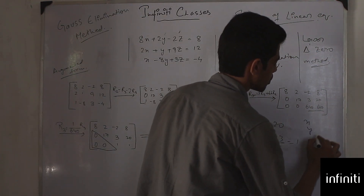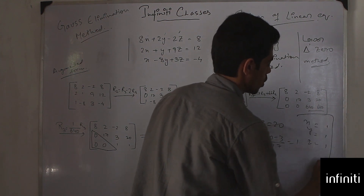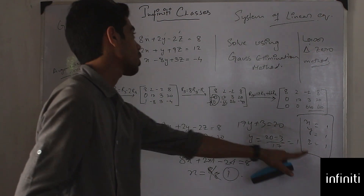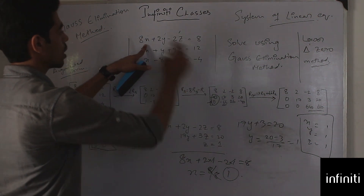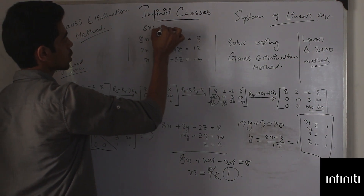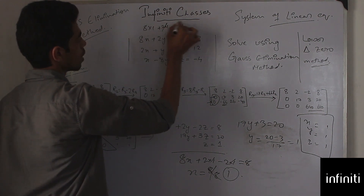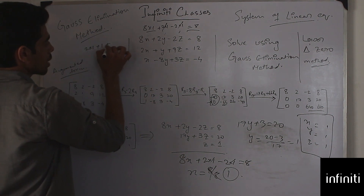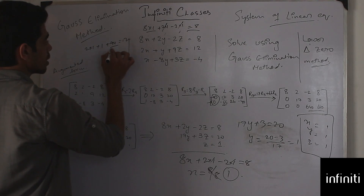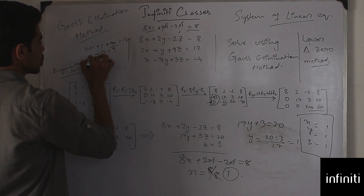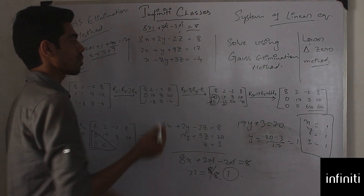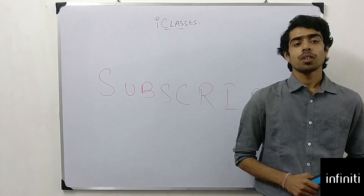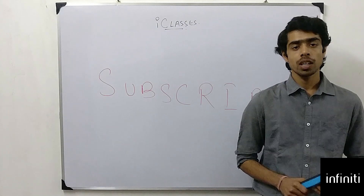So x = 1, y = 1, and z = 1. To verify, substituting into the original equations: 8(1) + 2(1) - 2(1) = 8 ✓; 2(1) + 1 + 9(1) = 12 ✓. The third equation can be verified similarly. Thank you friends for watching. Do subscribe, and for any queries just comment below.